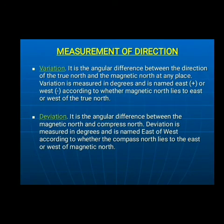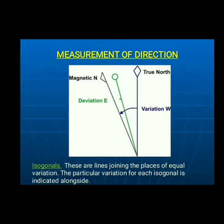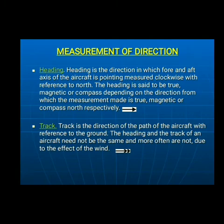Variation: the difference in angle between true north and magnetic north. Deviation: the difference in angle between magnetic north and compass north. Isogonals: lines joining points of equal variation. Heading: the direction in which the nose of the aircraft is pointed, considered in relation to north. Track: the actual direction in which the aircraft is travelling in reference to the ground.